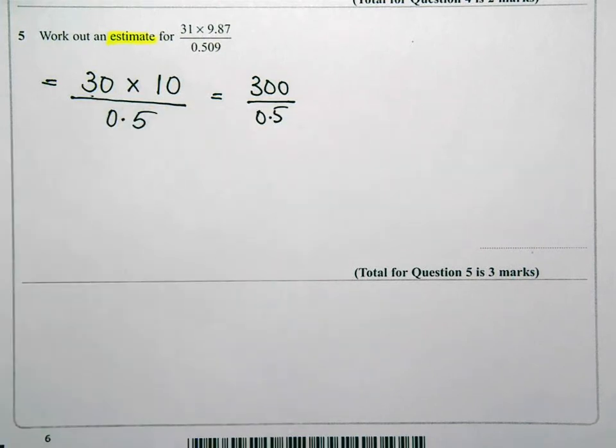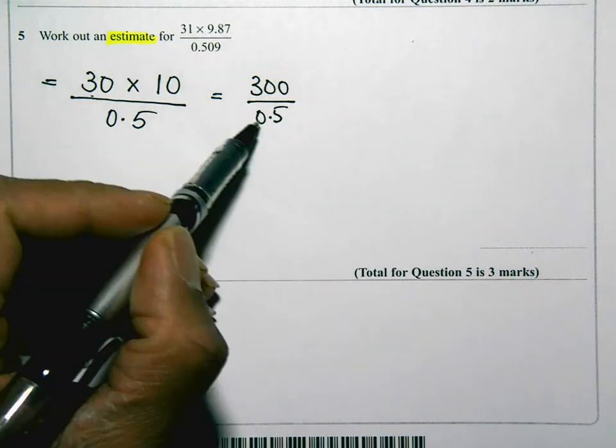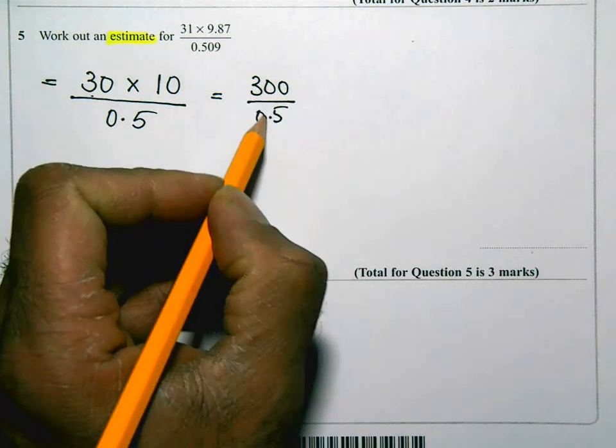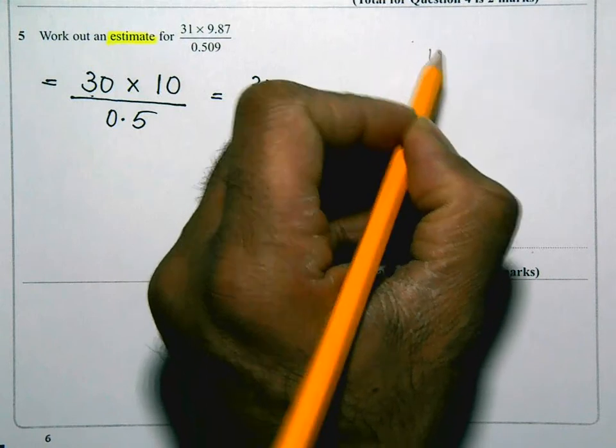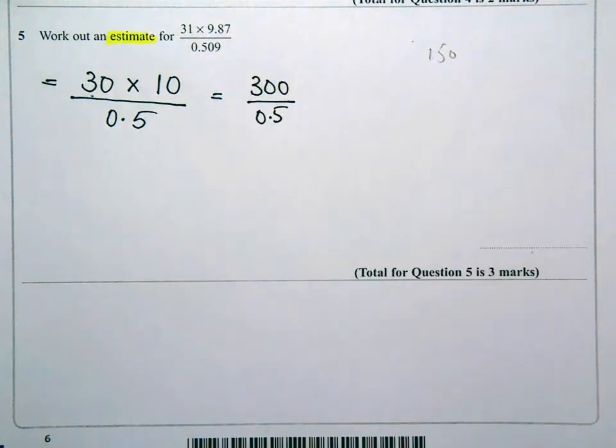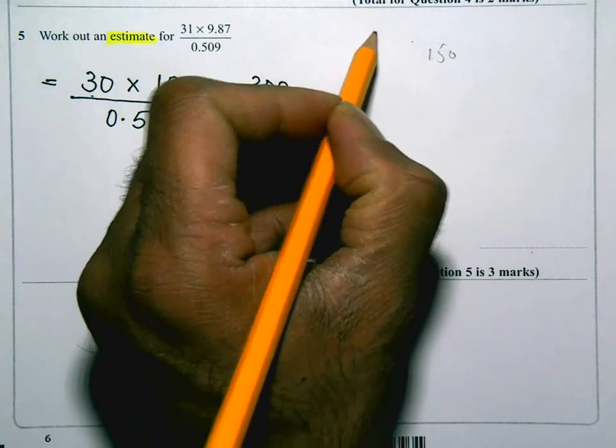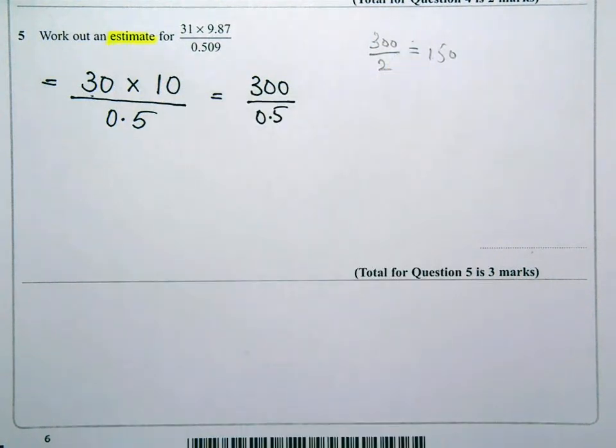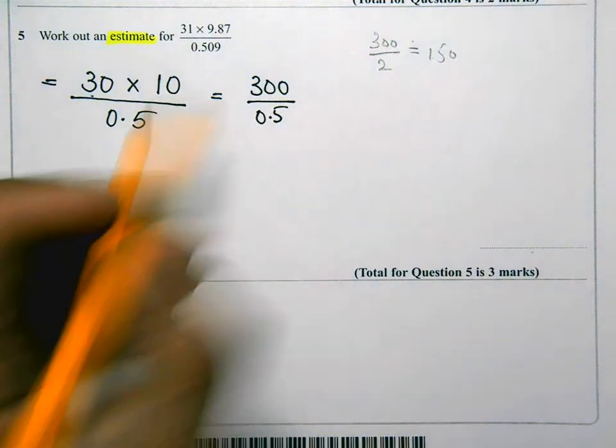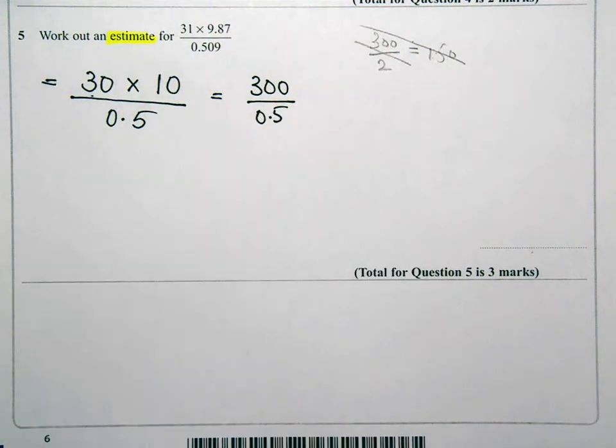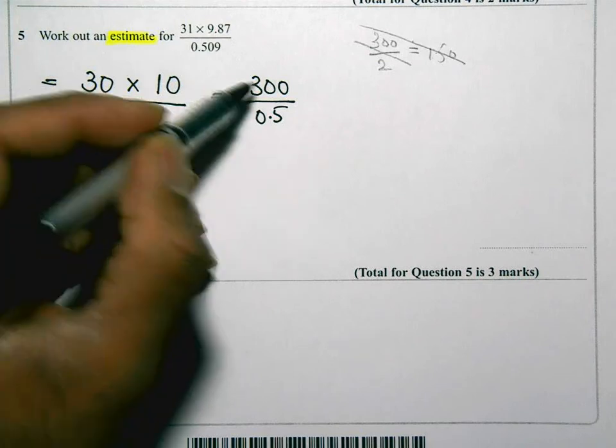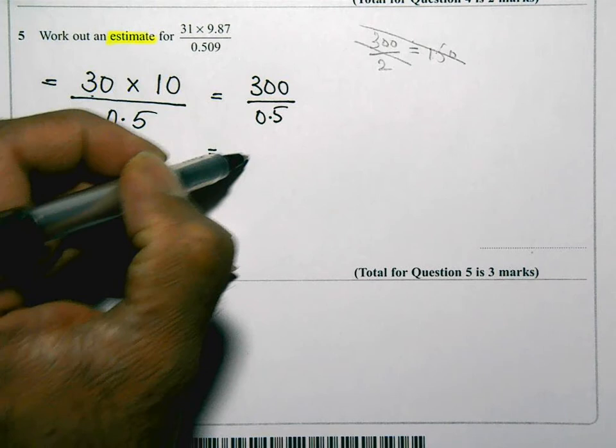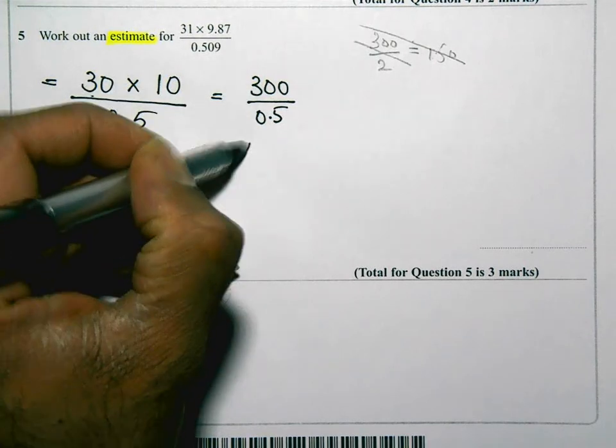Now in looking at this, I'm dividing by 0.5. Now a lot of people would look at this and think 300 divided by 0.5 is 150. Well, it's not. 300 divided by 2 is 150. So think carefully as you do this. 300 divided by 0.5, when you're dividing by 0.5, you're effectively doubling the number. So 300 divided by 0.5 is 600.